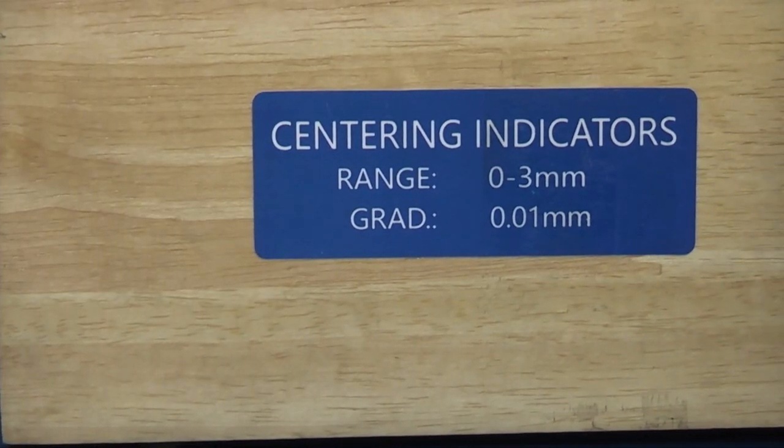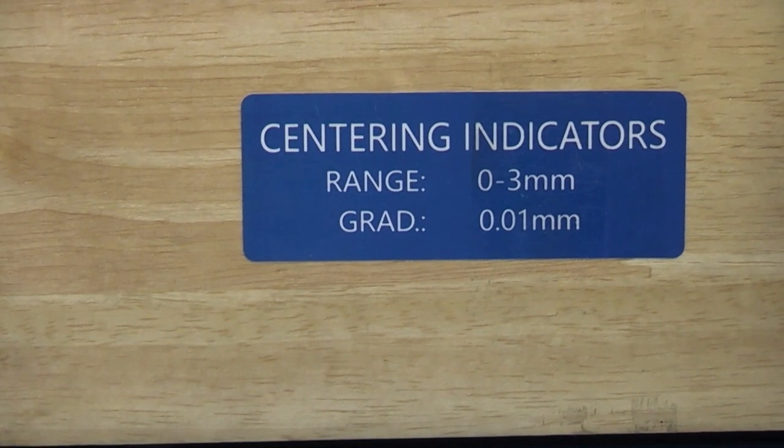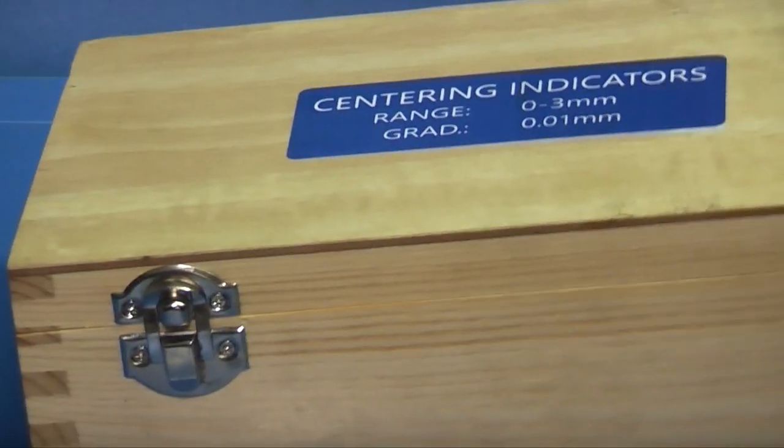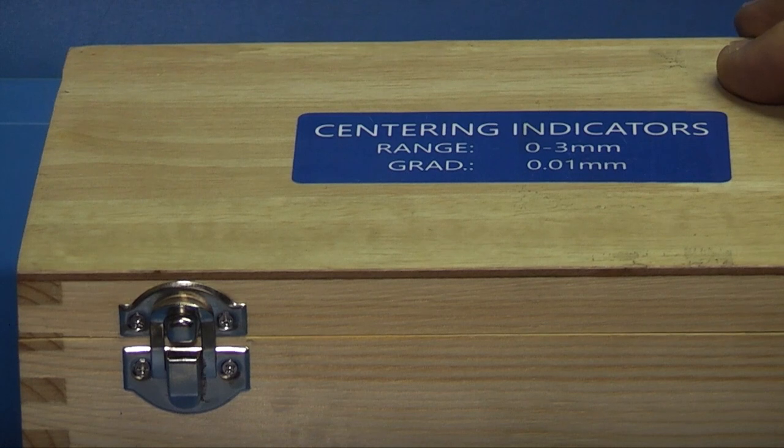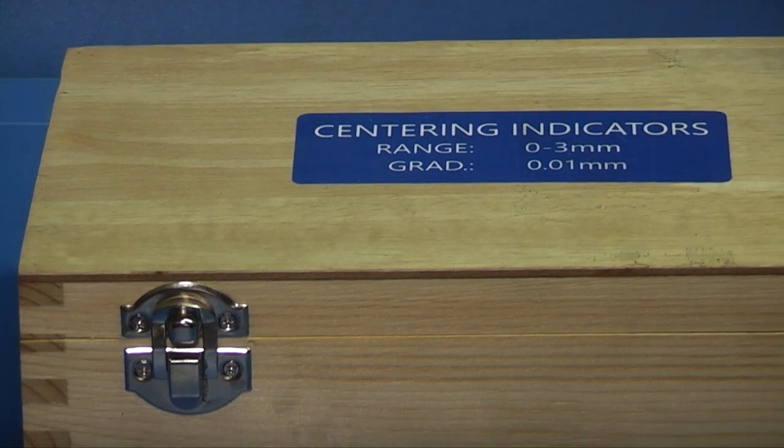Today I have this box from Banggood. It's a centering indicator and it's used on a milling machine to centre a hole in line to the spindle.